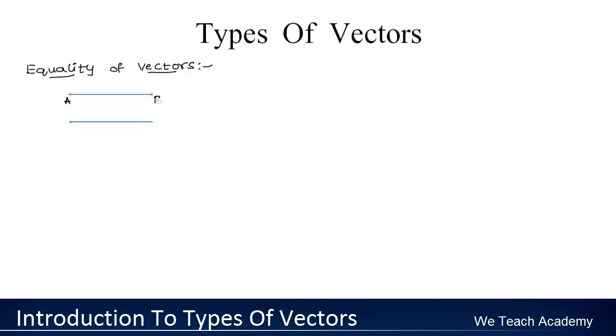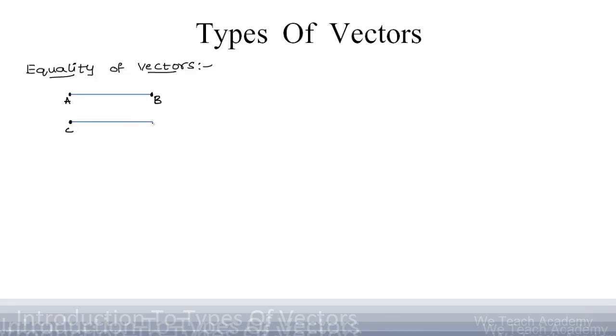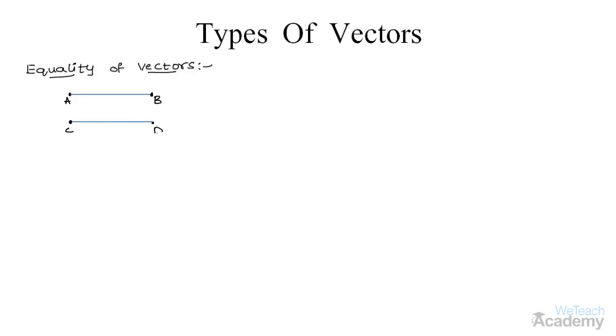Now let us name the first one as AB and the second line segment as CD. Both these line segments move in the same direction.